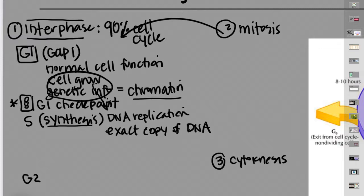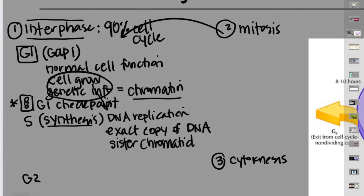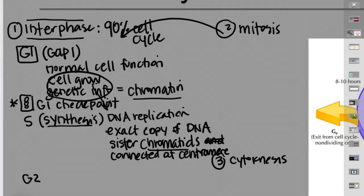The chromatin at this point has an exact copy, and it's important for those exact copies to be connected to one another. When a chromosome is replicated, each of the replicated copies are called sister chromatids. They're connected at the centromere, which is a protein complex that connects these exact copies of chromosomes — the sister chromatids.